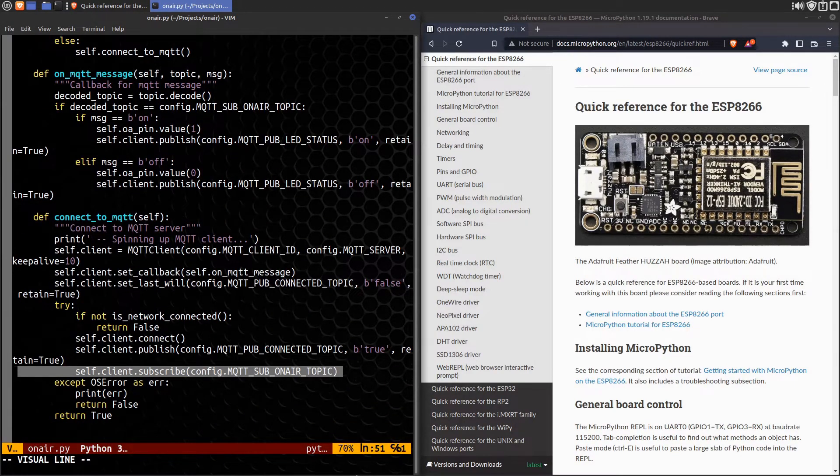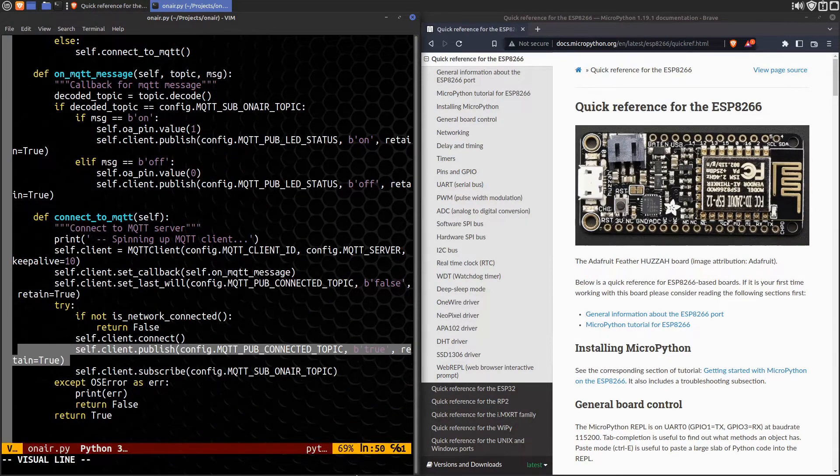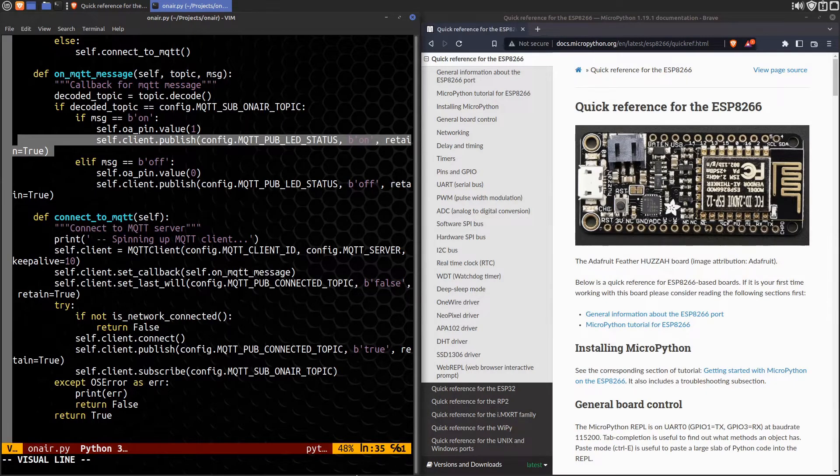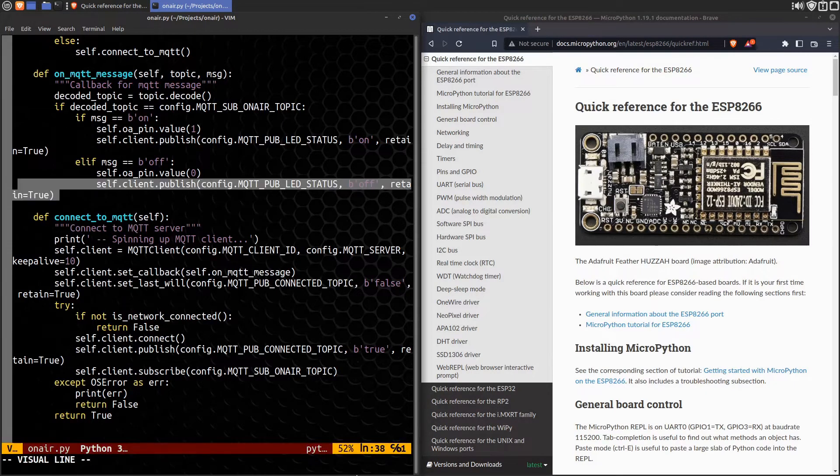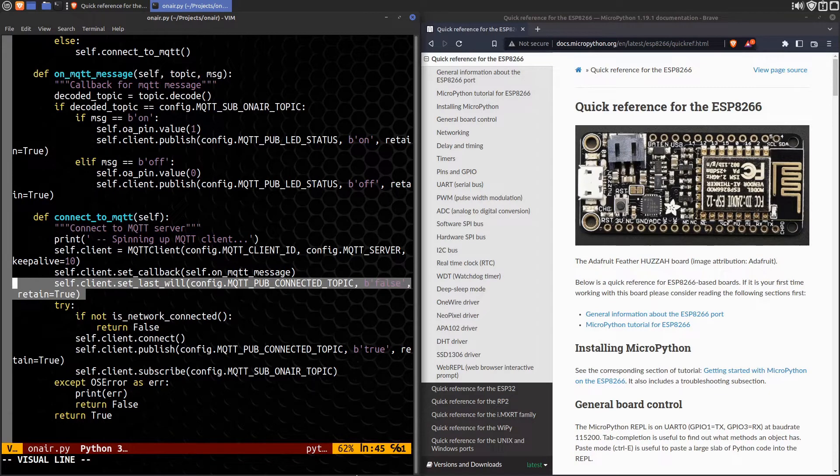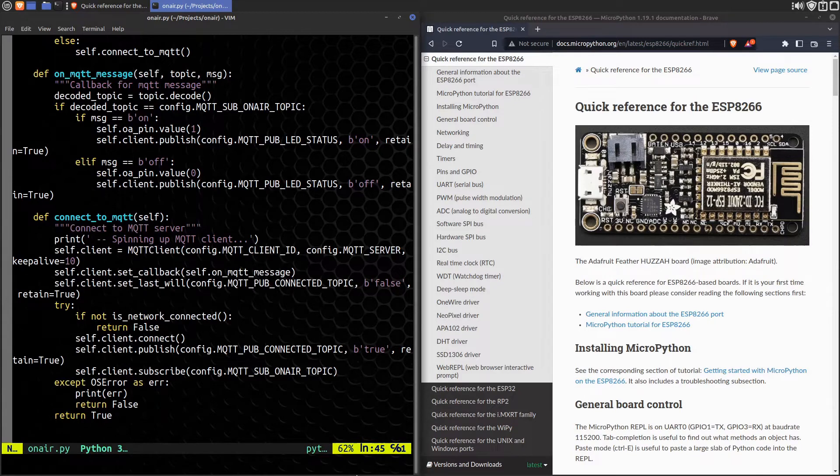It also publishes two messages. One to say it's connected to MQTT, and another for the light on-off status. It sets what's called the last will message to be a disconnected status. That way, if the controller goes offline for whatever reason, the MQTT server will automatically publish the last will message. This lets me know remotely that the controller is not operating.